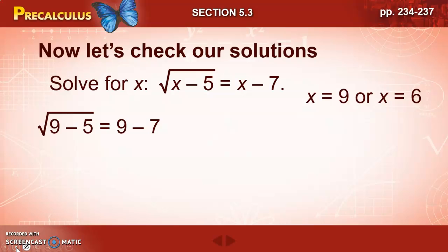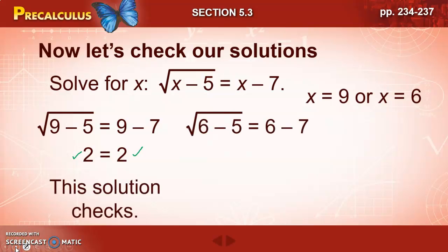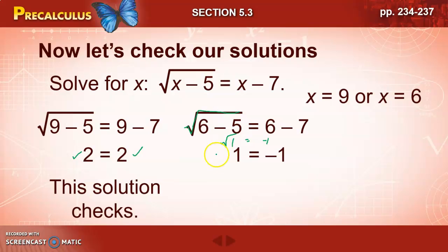When we plug in 9, we get the square root of 9 minus 5 equals 9 minus 7, which is the square root of 4 equals 2, and 2 does equal 2 — that solution checks. When we plug in 6, we get the square root of 6 minus 5 equals 6 minus 7, so the square root of 1 equals negative 1, which means 1 equals negative 1 — that's not true. So x equals 6 is an extraneous solution and we exclude it. Remember, when checking with the square root symbol we're checking the principal root.